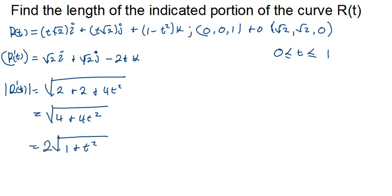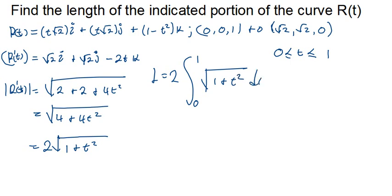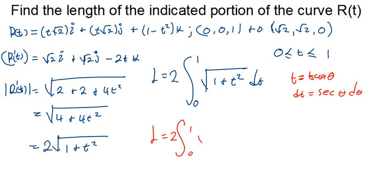That's the one we need to integrate. So the arc length L is equals to 2 times the integral from 0 to 1 of √(1 + t²) dt. We can apply trig substitution, meaning t equals tan θ, so dt equals sec² θ dθ. The integrand becomes √(1 + tan² θ) · sec² θ dθ. We are now familiar with this — we did a similar question in the previous video.